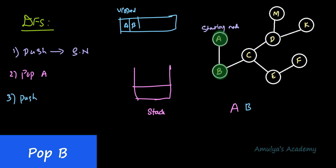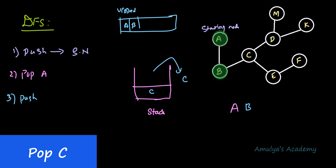Now B is visited. We push all the unvisited adjacent nodes of B onto the stack. C is the adjacent node of B and it is unvisited, so we push C. After the push operation, we perform the pop operation — only one element is present, so we pop C. We check whether C is already visited — no, so we visit C and add it to the visited list.